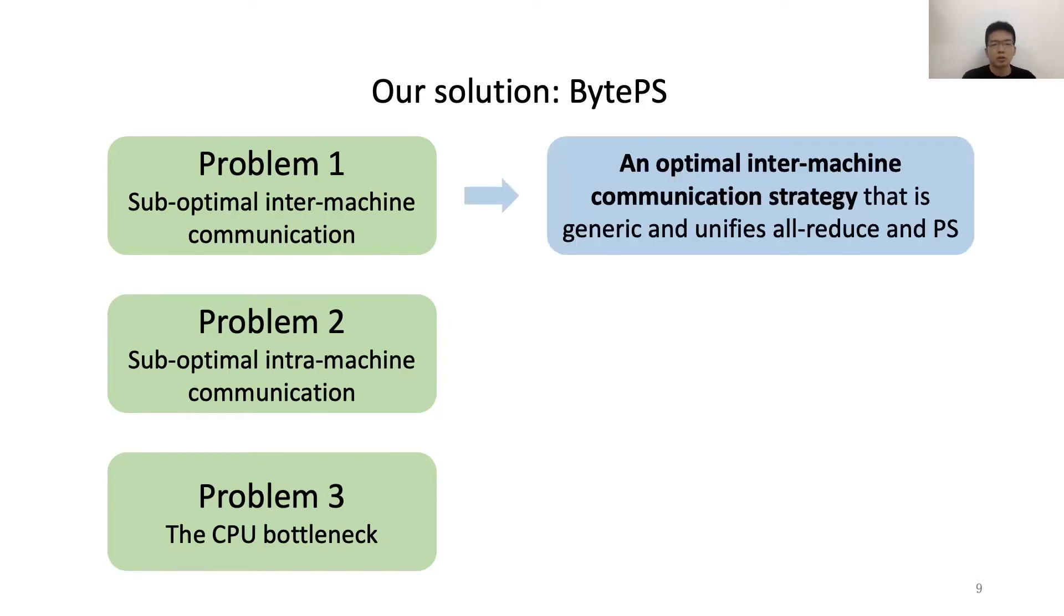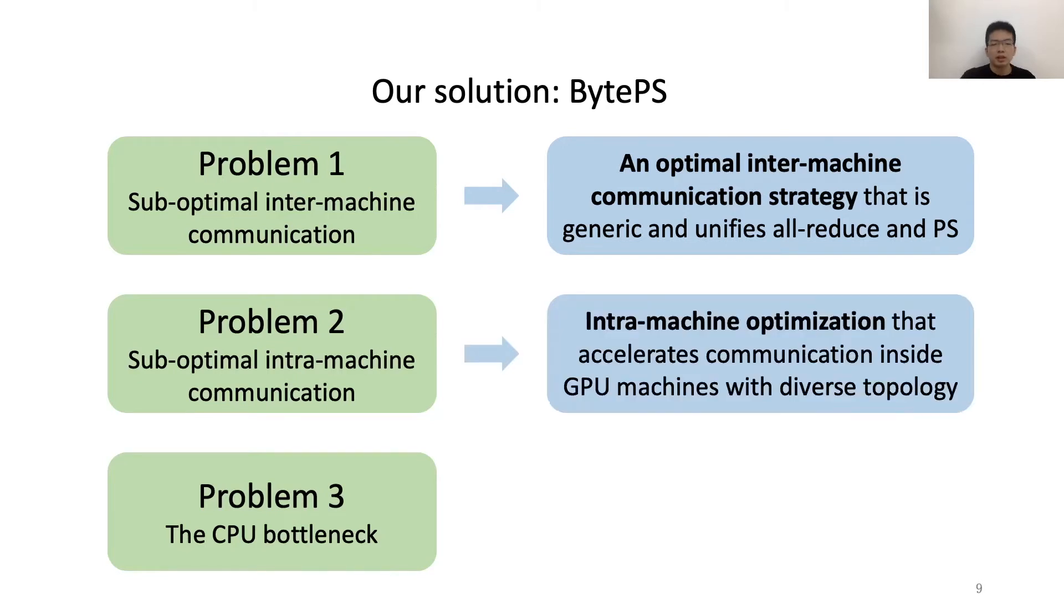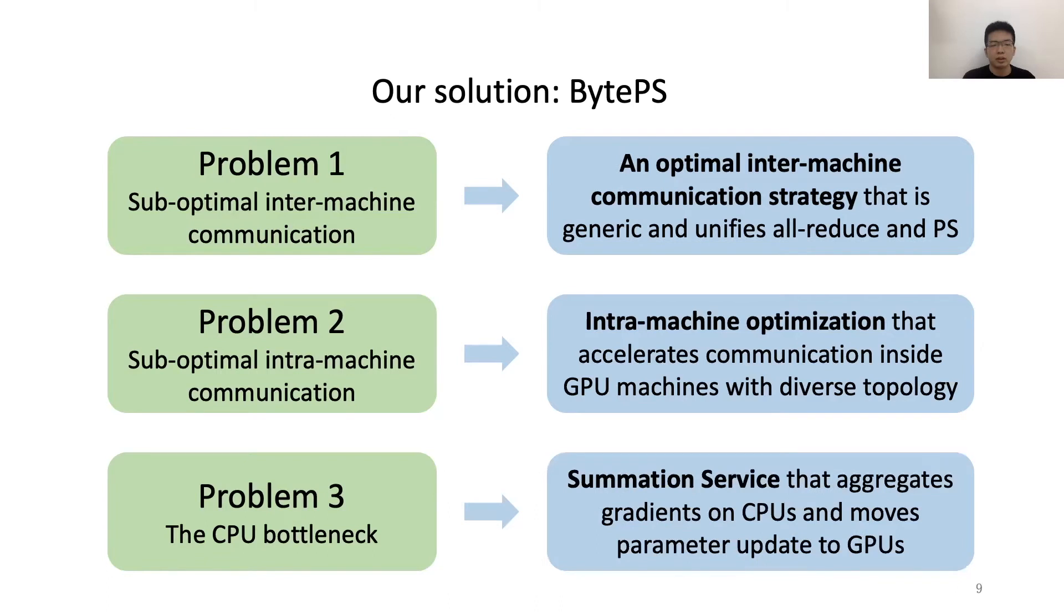First, it introduces an optimal inter-machine communication strategy that is generic and can unify all-reduce and PS. Second, it has intra-machine optimization that can accelerate the communication inside GPU machines with diverse topology. And finally, it introduces a new abstraction called Summation Service that can aggregate the gradients on CPUs and move the parameter update to GPUs. The Summation Service can address the CPU bottleneck efficiently.